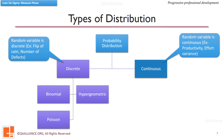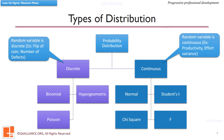Where the random variable is a continuous value, it is a continuous probability distribution. For example, productivity, failure rate, variance, etc. Common distributions in this category are Normal, Student's t, Chi-square, and F distribution. We now go through all these distributions one by one and learn about their basic characteristics.